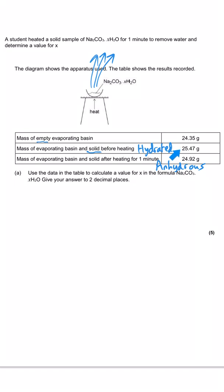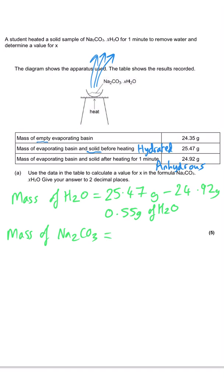What happens in this experiment is water gets driven away from the crystals, and you are left with anhydrous crystals in your evaporating basin. The basin has gained mass when you put the sodium carbonate in it, and then it loses mass once that water has been driven off. We need to start by working out the mass of water, the difference between 25.47 grams take away 24.92 grams, which gives us 0.55 grams of water. Then we work out the mass of sodium carbonate left over, 24.92 take away 24.35, which gives us 0.57 grams of sodium carbonate.